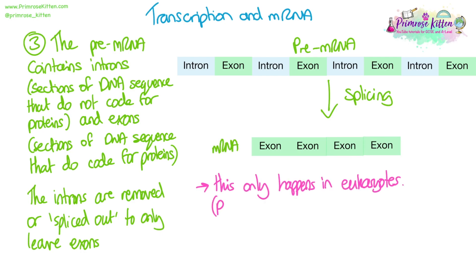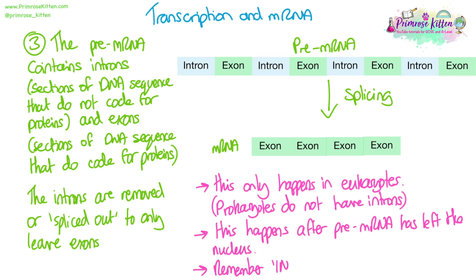This only happens in eukaryotes. Prokaryotes do not need to carry out splicing because they don't actually have introns and exons in their DNA — all of their DNA codes for proteins, so they don't have any non-coding sections. This normally happens after the pre-mRNA has left the nucleus, so it happens in the cytoplasm, and then once it's been done that piece of mRNA will go off to the ribosome. A helpful way to remember which way round this is: introns interrupt the exons, so they are the ones that need to be removed.